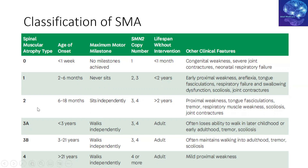SMA2 patients usually have disease manifestation between six and 18 months, may achieve independent sitting, have SMN2 copy numbers of three or four, and lifespan greater than two years. They also tend to have proximal weakness, tongue fasciculations, scoliosis, and joint contractures. In SMA, there is proximal and axial muscle involvement early on, with possible distal muscle involvement as the disease progresses, leading to scoliosis and joint contractures.